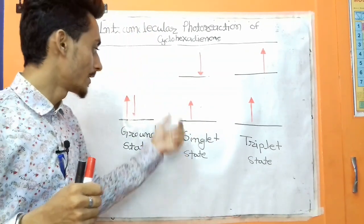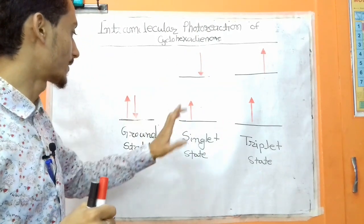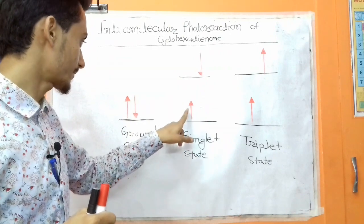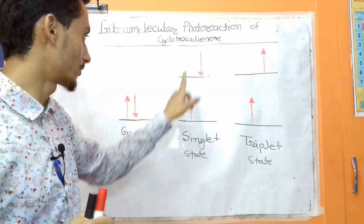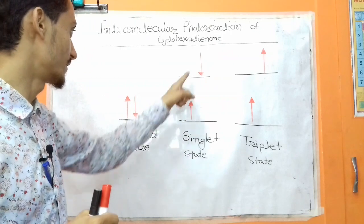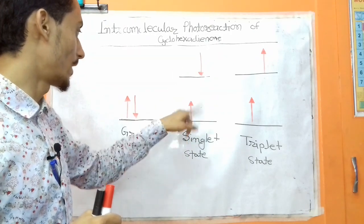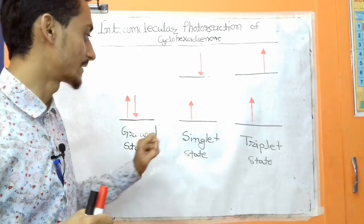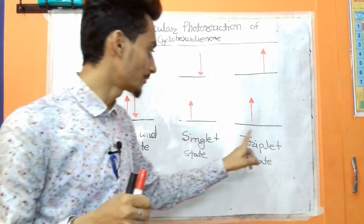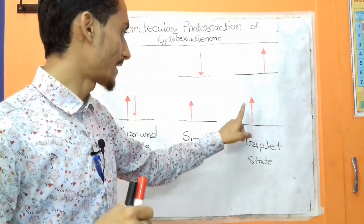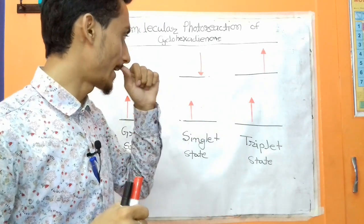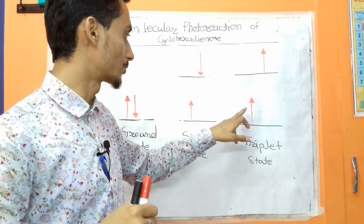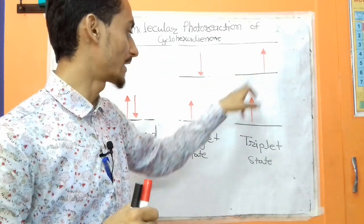In the singlet state, excitations are completed without spin conversion — both electrons do not change their spin. In the triplet state, excitations occur with spin inversion, and both electron spins become parallel to each other. This is called the triplet state.